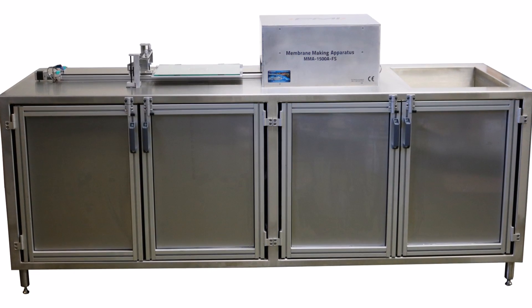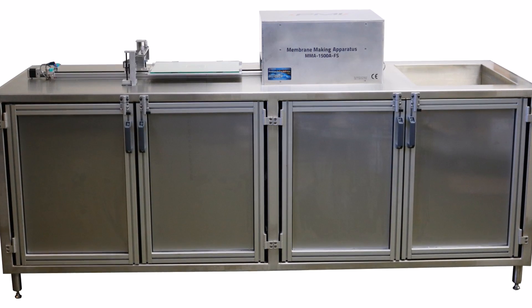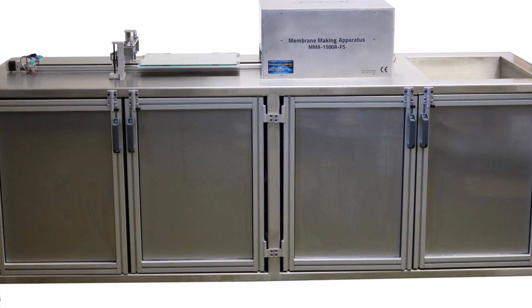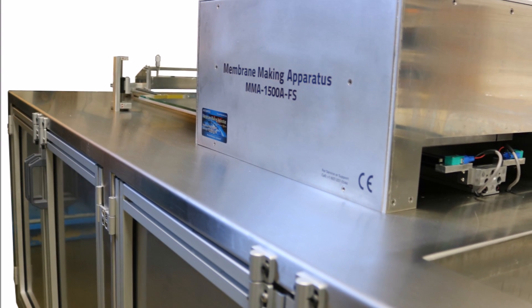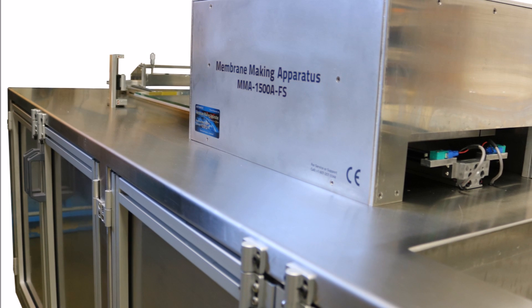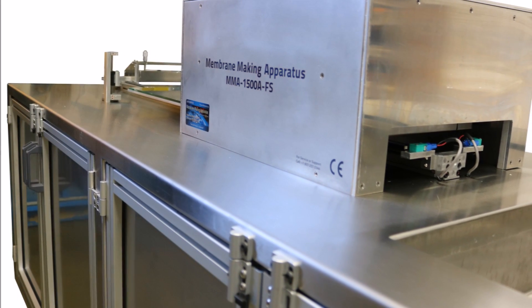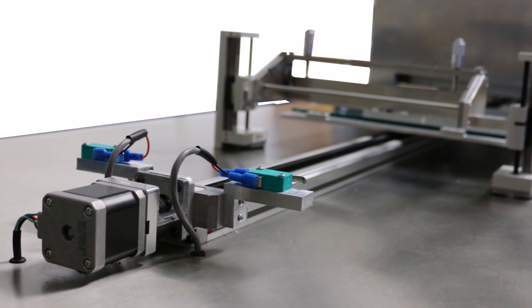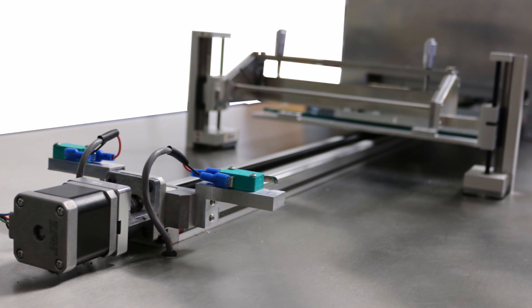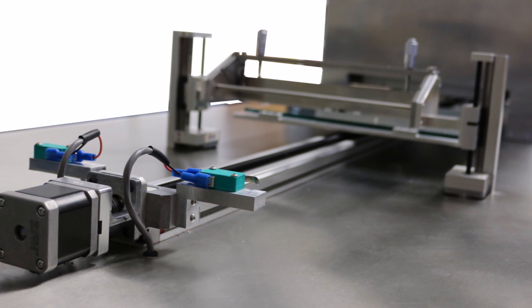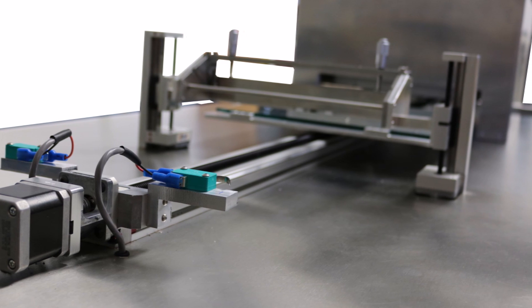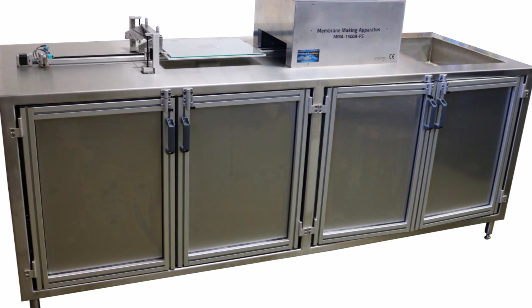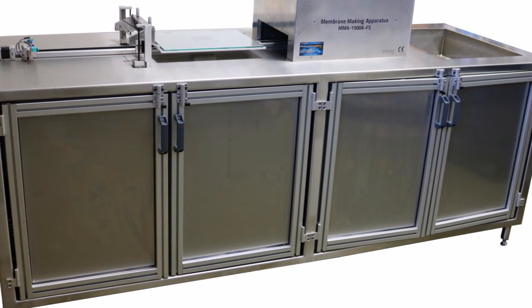Porous Materials Incorporated is proud to present the Flat Sheet Membrane Making Apparatus. This machine is capable of making flat sheet polymeric membranes from any conventional polymer at a predetermined thickness, which can be used for various research and development applications. Having been experts on porous materials and membranes for over 35 years, PMI understands the nuances of membrane making and has built this machine to provide the user with maximum control over the membrane making process while maintaining the best in the field user friendliness.